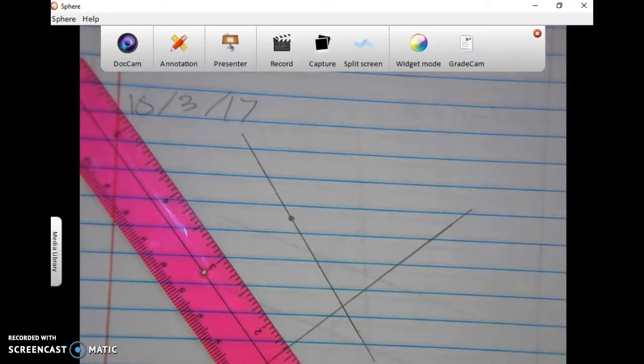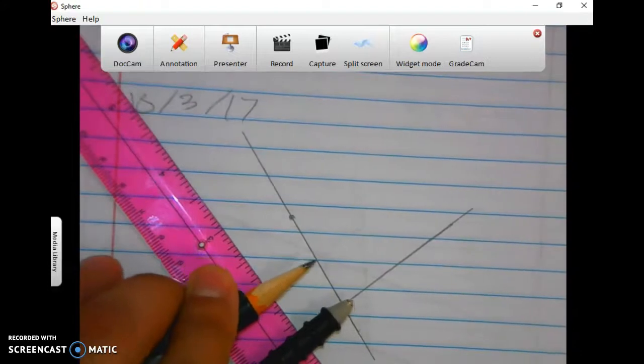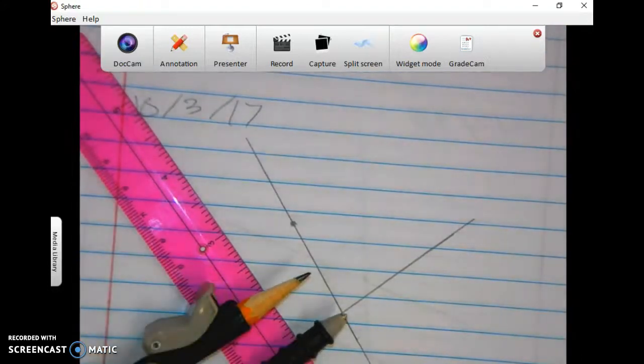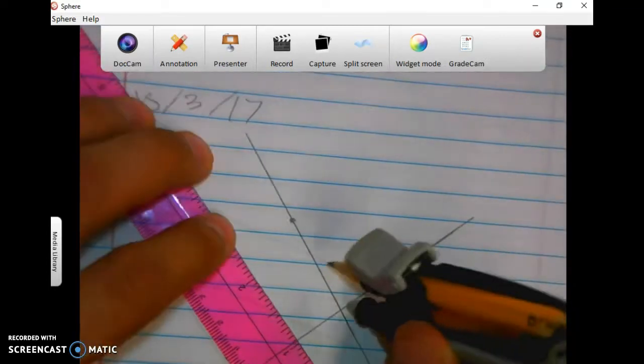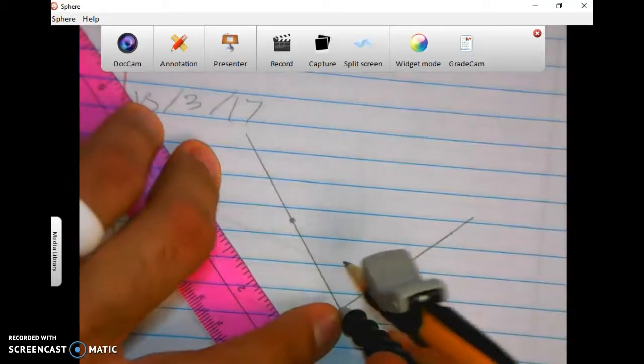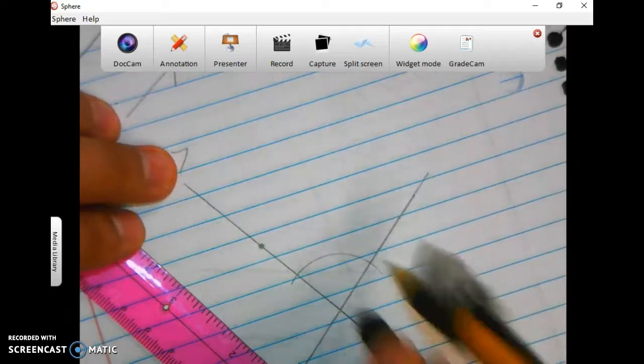Then our second step on the yellow sheet tells us to measure about halfway. Take your compass, put it about halfway like that, and then I want you to make an arc that touches both lines. Measuring about halfway, you want to put your points at that intersection and make yourself an arc that goes through both lines.